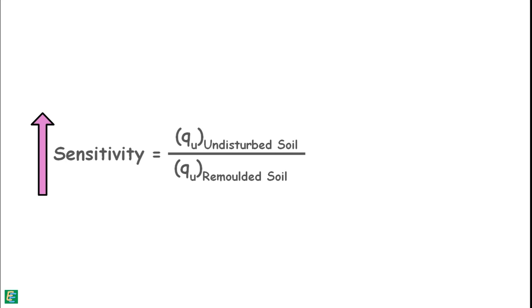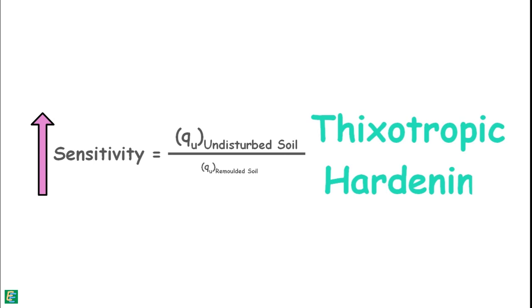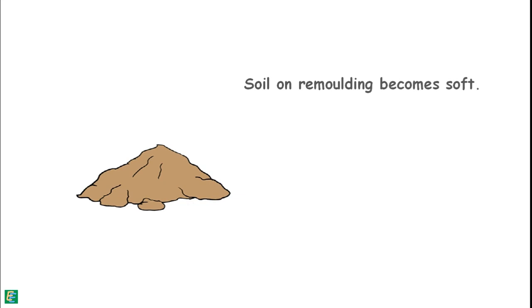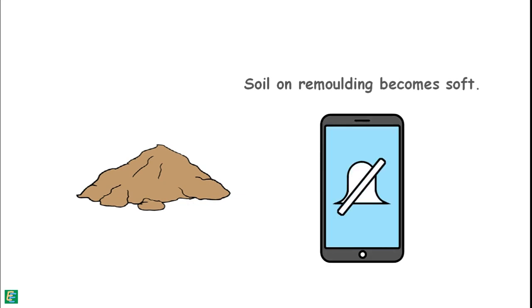Higher is the sensitivity of soil, which means soil loses more of its strength on remolding, larger will be the thixotropic hardening. We can say that because of remolding soil becomes soft, and if it is left undisturbed for some time, soil regains some of its hardness.